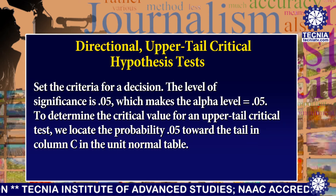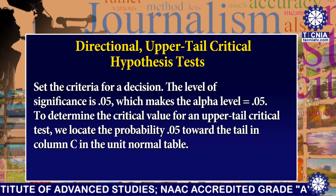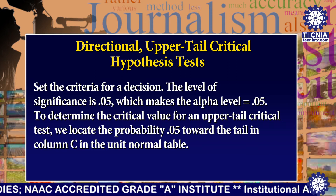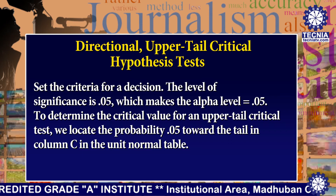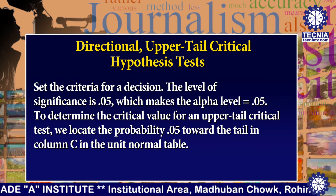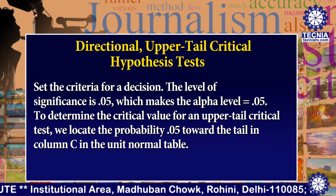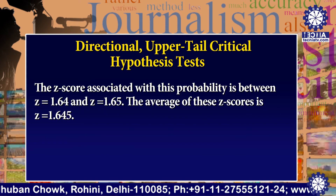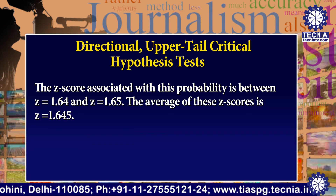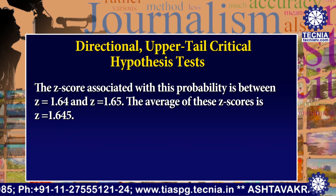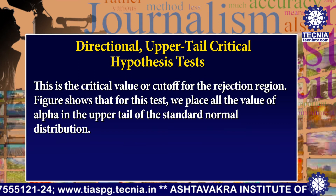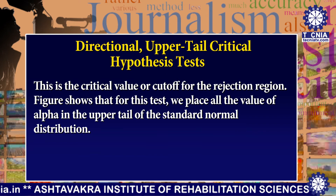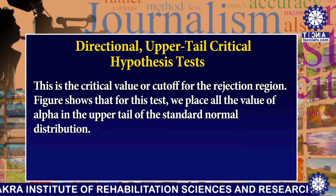Now I am explaining Step 2. Step 2 is concerned with setting the criteria for a decision. The level of significance is 0.05, which makes the alpha level equal to 0.05. To determine the critical value for an upper tail critical test, we locate the probability 0.05 towards the tail in column C in the unit normal table. The Z score associated with this probability is between Z equal to 1.64 and Z equal to 1.65. The average of these Z scores is Z equal to 1.645. This is the critical value or cutoff for the rejection region. The figure shows that for this test we place all the value of alpha in the upper tail of the standard normal distribution.